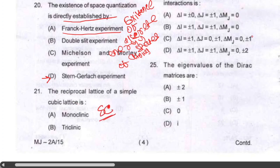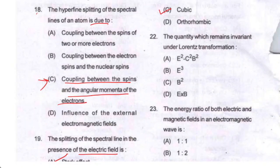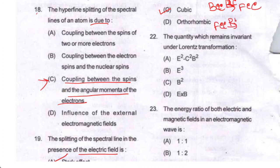Question number twenty-one: the reciprocal lattice of a simple cubic lattice is a simple cubic lattice. So option C is your correct option. Similarly, the reciprocal lattice of BCC is FCC, and the reciprocal lattice of FCC is BCC.